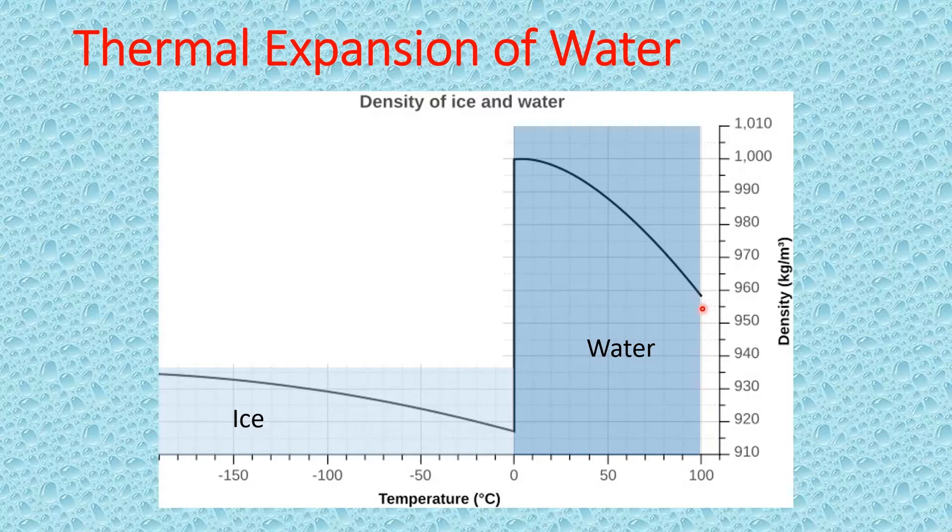As you reduce the temperature, the volume decreases as well, which is why the density increases. And that's the general behavior of most substances. The lower you make their temperature, the more density increases or the less volume they occupy. Or you could say they contract.